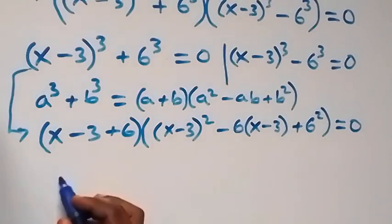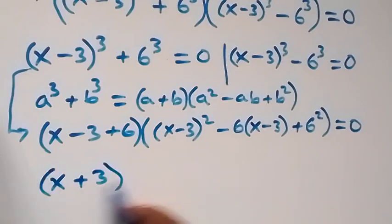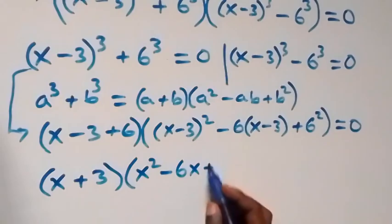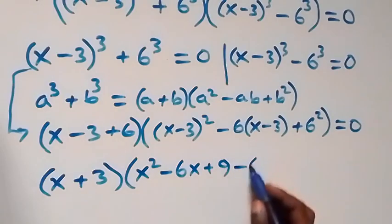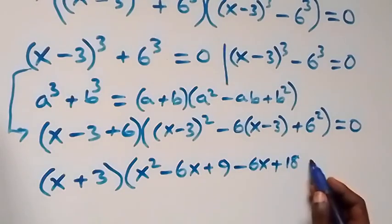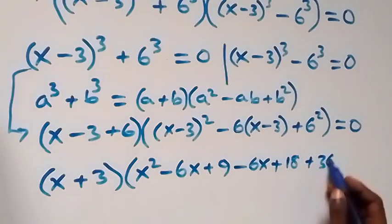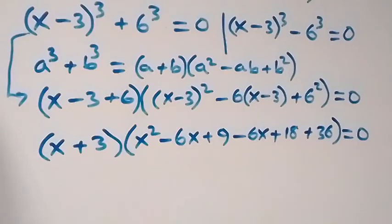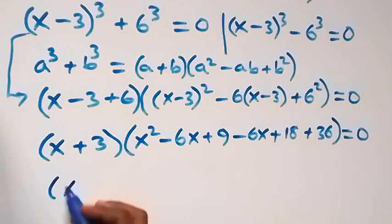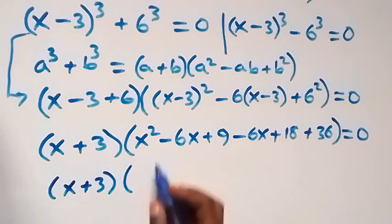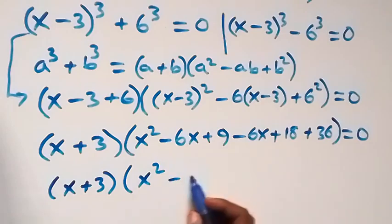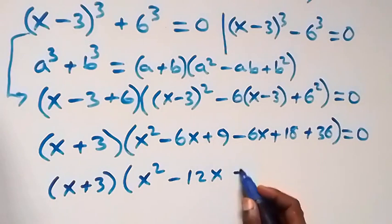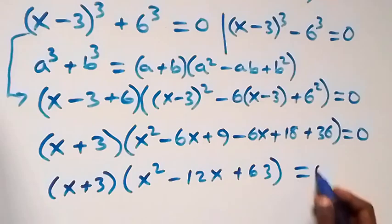Expanding, this is (x + 3)[x² − 6x + 9 − 6(x − 3) + 36] = 0. Opening the bracket: minus 6 times (x − 3) gives minus 6x + 18. So we have (x + 3)[x² − 6x + 9 − 6x + 18 + 36] = 0, which simplifies to (x + 3)(x² − 12x + 63) = 0.